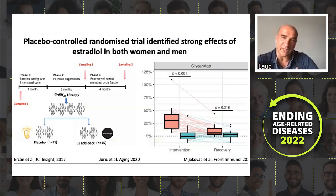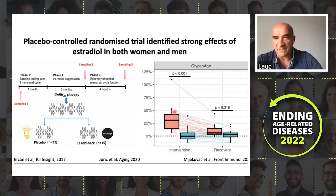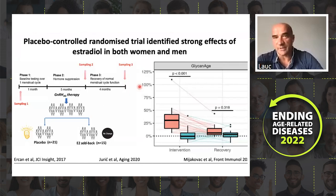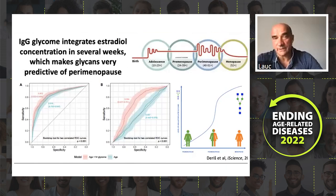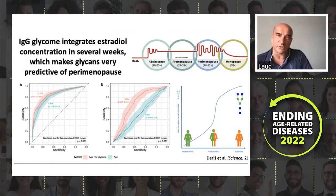We are trying to do hard science to understand how this happens. In a very interesting study, we got samples where gonadal hormones were chemically blocked and then subjects were supplemented with either estrogen or placebo. Ladies on placebo aged, on average, nine years in six months, while estrogen supplementation prevented this. Interestingly, in men, it is also estrogen — testosterone works, but only if you do not block aromatase. We believe that IgG glycome composition is a reflection of average estrogen concentration over the last couple of weeks — something like what HbA1c is for glucose, glycome composition is for estrogen.